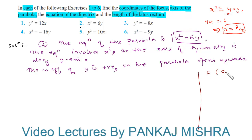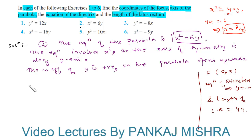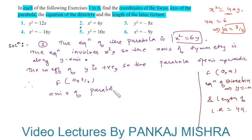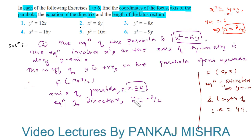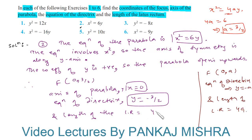For such parabolas, the focus is at (0, a), the equation of the directrix is y = −a, and the length of the latus rectum is 4a. Therefore, the focus is at (0, 3/2), the axis of the parabola is x = 0, the equation of the directrix is y = −3/2, and the length of the latus rectum is 4 × (3/2) = 6.